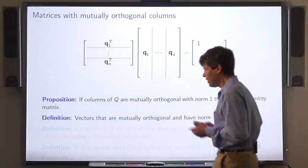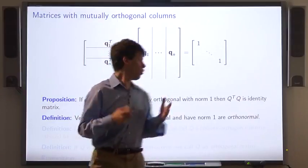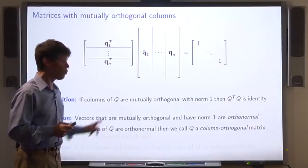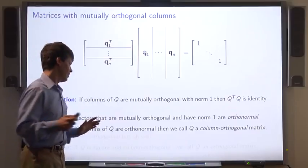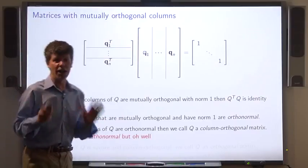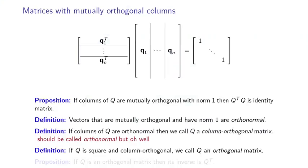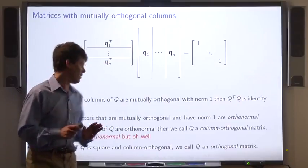Well, we say that vectors that are mutually orthogonal are orthonormal. And if a matrix q has orthonormal columns, we call q a column orthogonal matrix. Now, I know it should be called column orthonormal, but that's the way it goes. And if q is a square matrix and column orthogonal, we call q an orthogonal matrix. It really should be called an orthonormal matrix, but this is the convention.